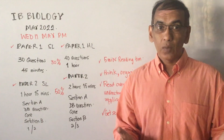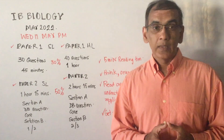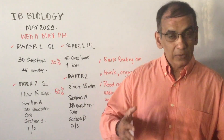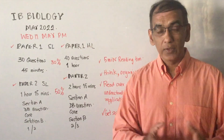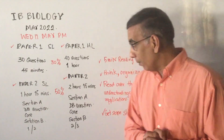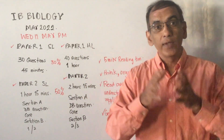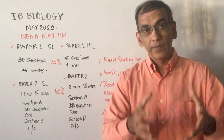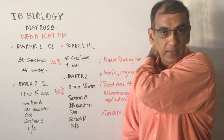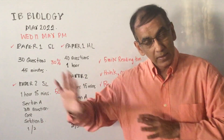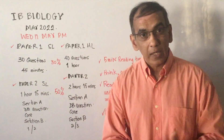Topic 11 and Topic 1 are quite long, so expect more than three questions on those. Once you finish Paper 1, you will have completed 30 percent of the marks for your final score. The other 20 percent from the internal assessment has already been submitted to IB and is being scored right now.